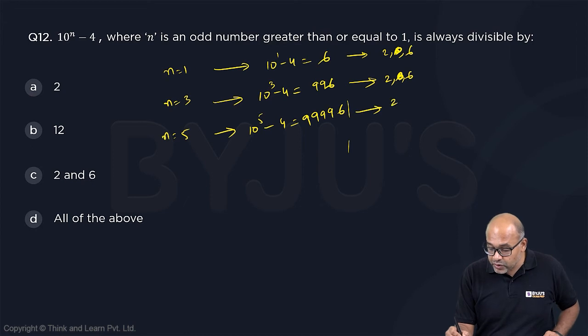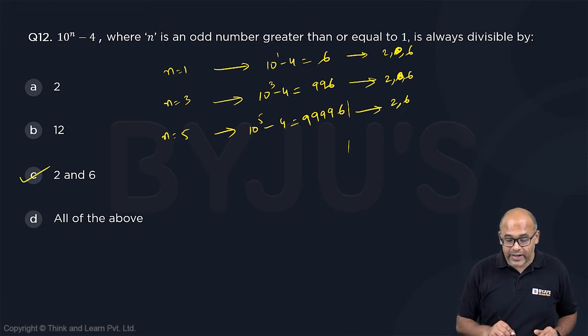Then again I have 2 and 6. It is divisible by 2 and 6, so clearly the answer has to be 2 and 6.